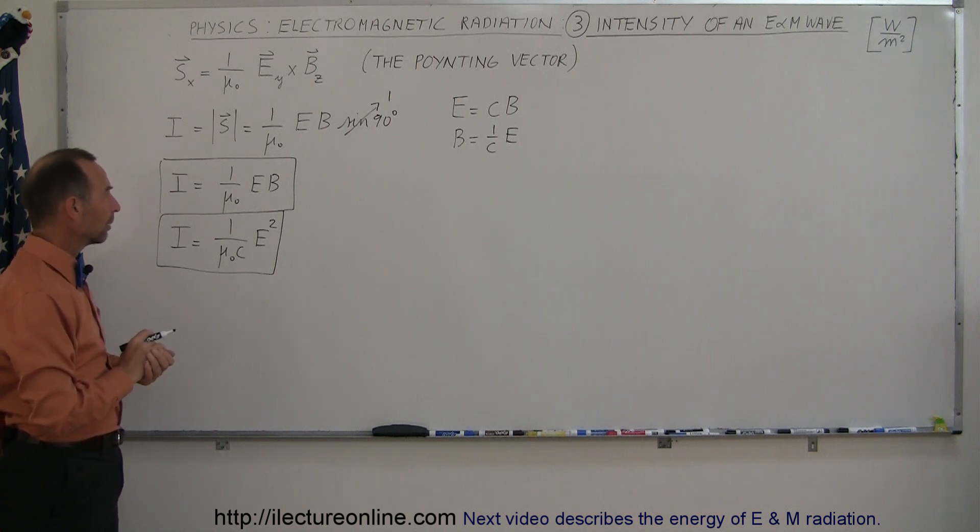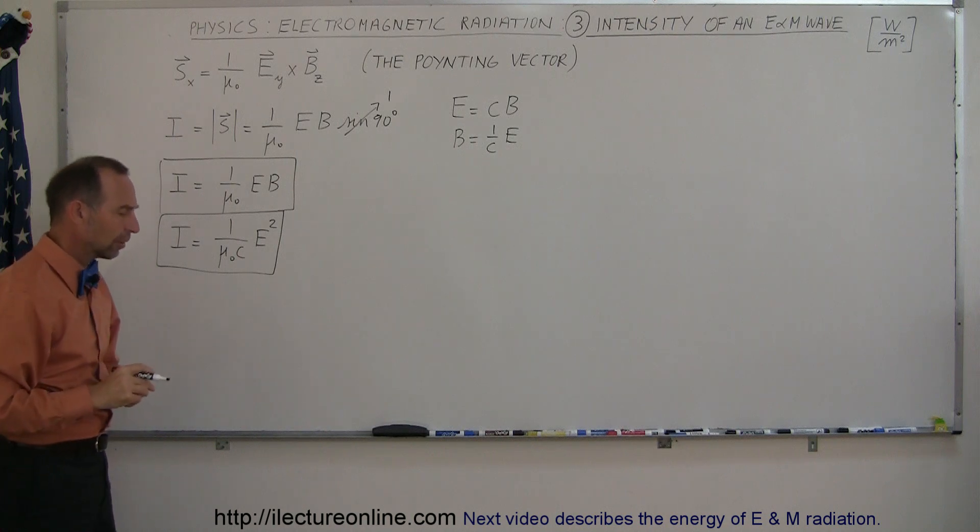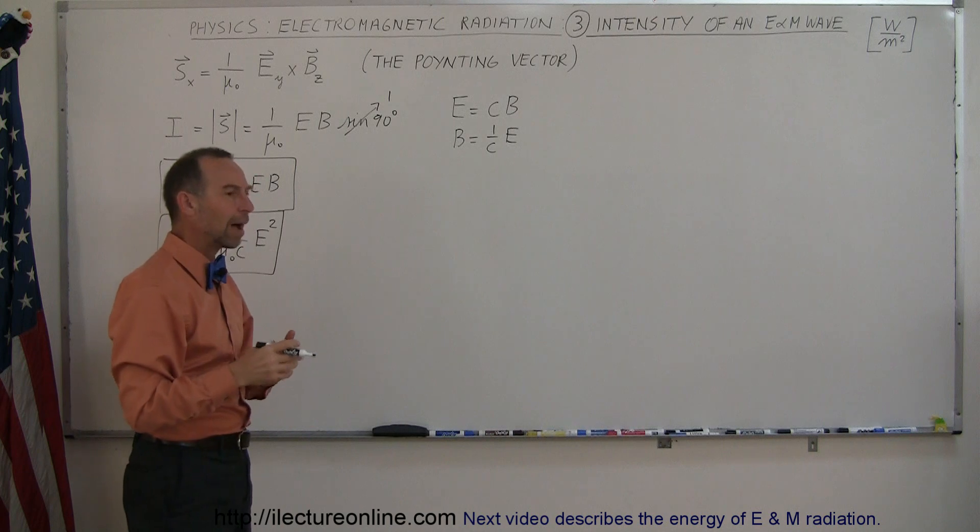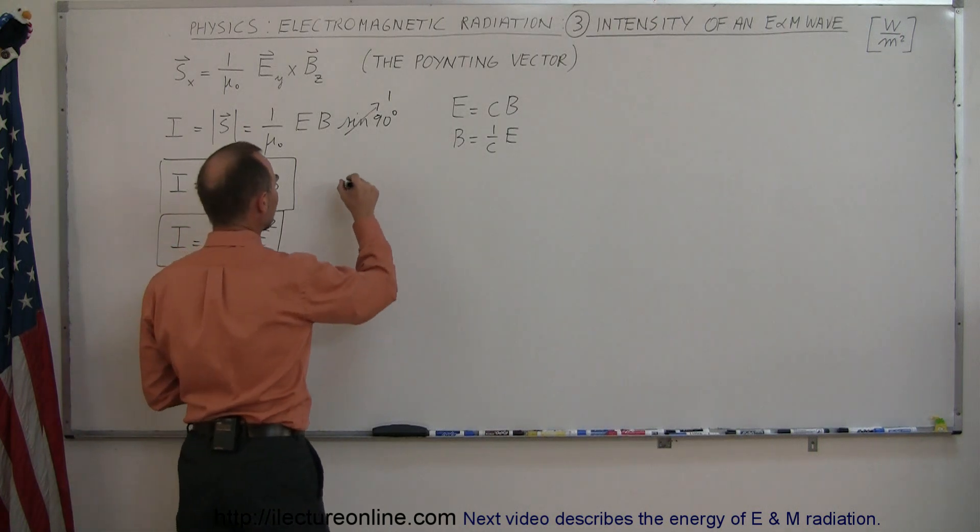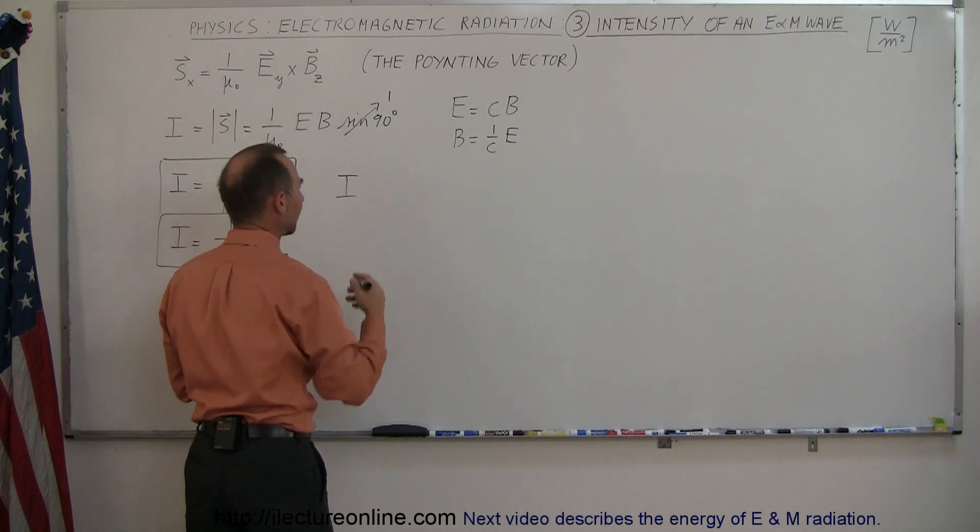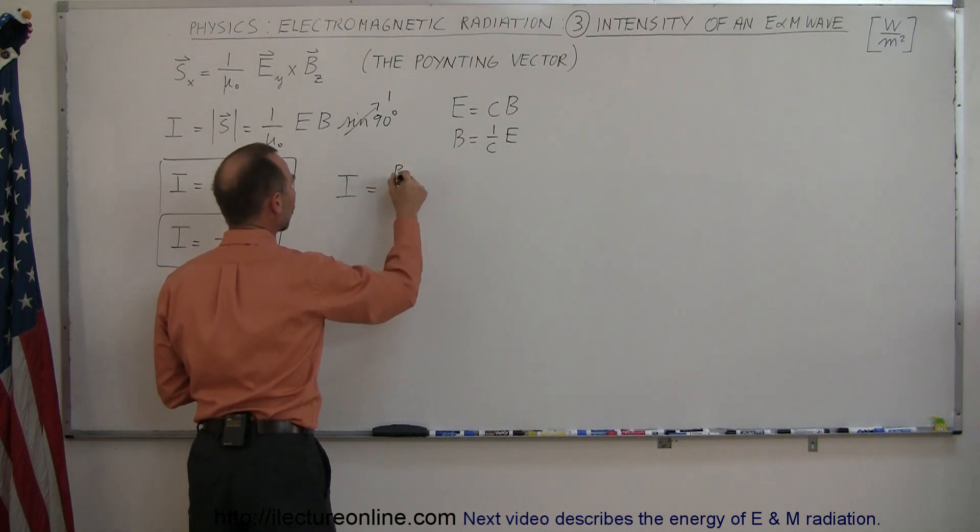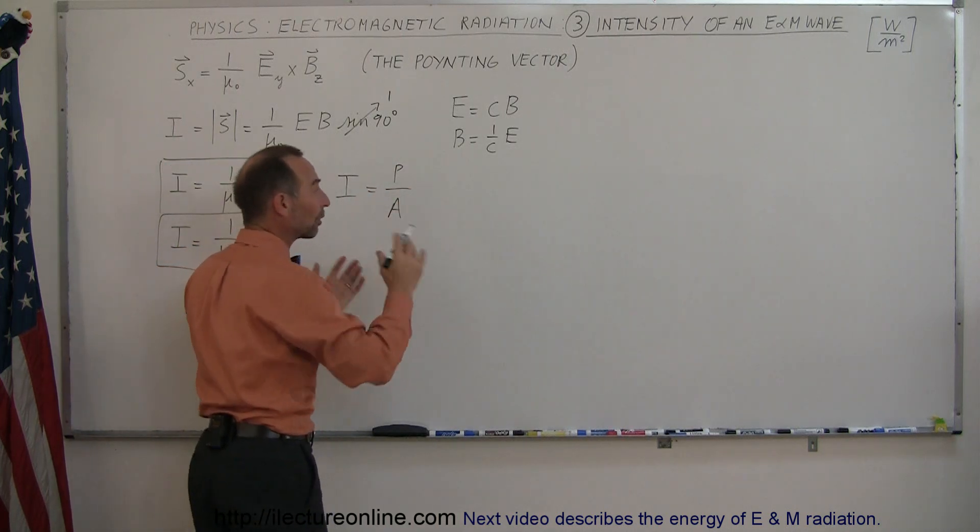Now we can apply that in some ways. Also notice that the definition of intensity can also be described as power over area. So the intensity of radiation can be described as the power of the source divided by the area over which it spreads.